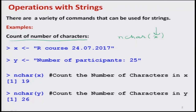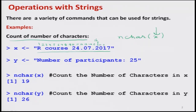Let me take an example. Suppose I write the sentence 'R course 24 July 2017'. If you try to count how many characters are here: R is 1, blank space is 2, then C-O-U-R-S-E is 3 through 8, blank space is 9, then 2-4 is 10-11, dot is 12, 0-7 is 13-14, dot is 15, 2-0-1-7 gives 16 through 19. Note that blank spaces are also counted as characters.